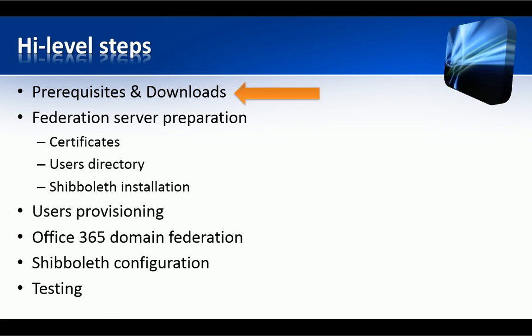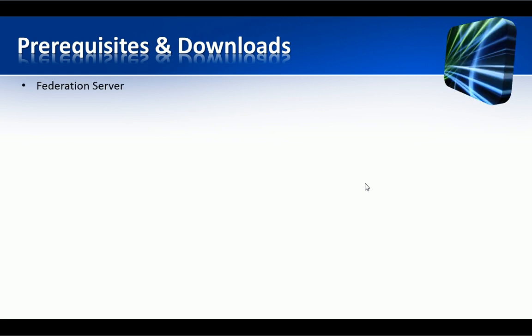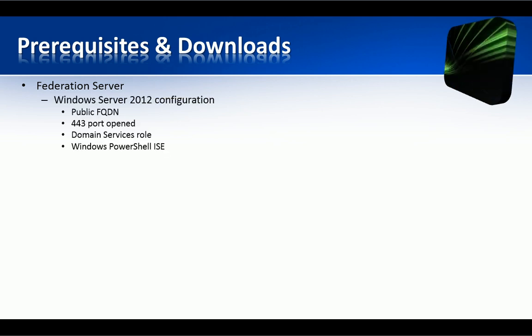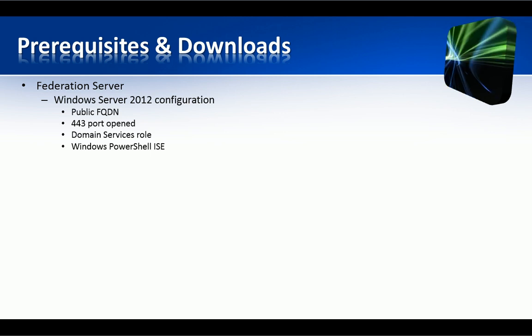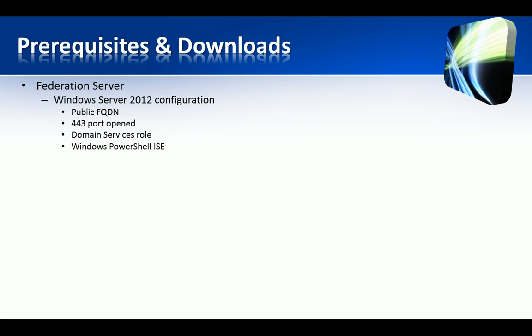So, let's now start with prerequisites and downloads. On your side, in your network, you need at least a federation server with the ability to request and install certificates. The server must be reachable from the outside on the SSL port 443 by default. In other words, it must have a public name and a public certificate for that host name.